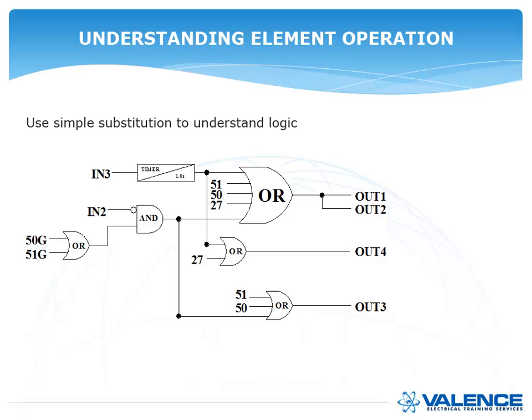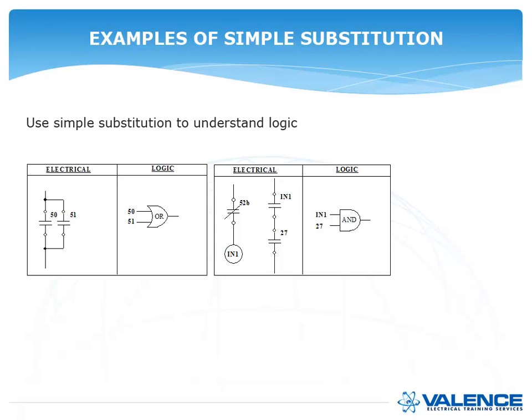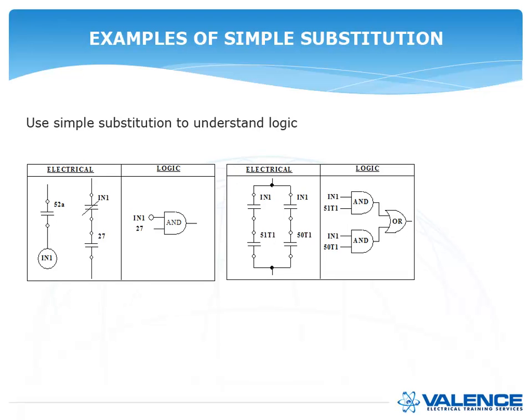So this particular logic scheme could be quite complicated, but you can break it down into its base components. You can use simple substitution to understand the logic. So if my logic says 50, 51 into an OR gate, like I said before, that's two contacts in parallel. Or if I have an IN1 and a 27 going into an AND gate, that would be two contacts in series. Now, if it's knotted, if it's a 52A and then you knot it, then that would be the same thing as having a normally closed version of that IN1, like it's shown on the left-hand side. And we already went in detail about two contacts in series and in parallel to create that kind of logic diagram.